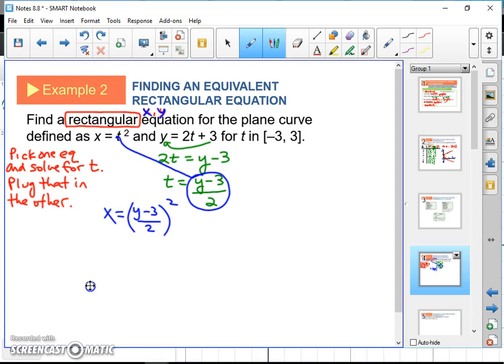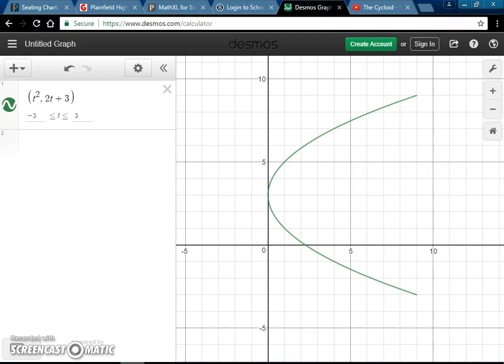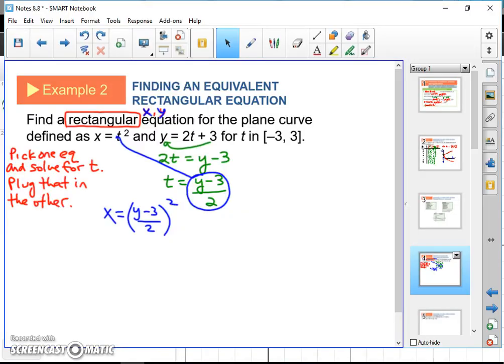Does anybody know what that looks like? Anybody know what shape that makes? We should because we just drew it in example 1. Remember when we drew it in example 1, it was that sideways parabola. The parametric representation we plugged in, we got that sideways parabola.